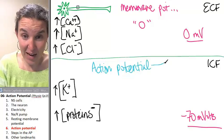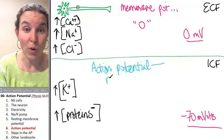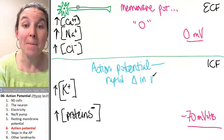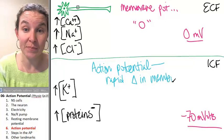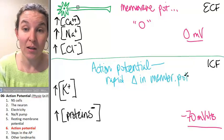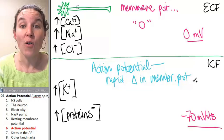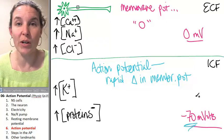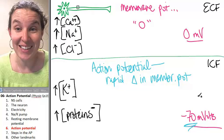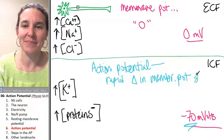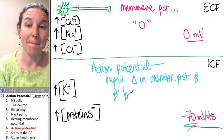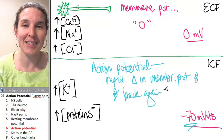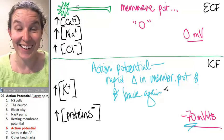The action potential is a rapid change in membrane potential from negative 70 up to like 30, positive 30, and back again.